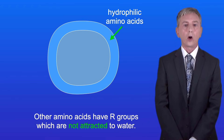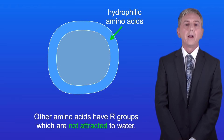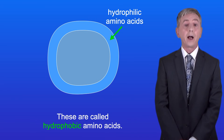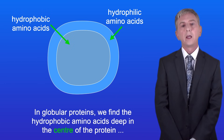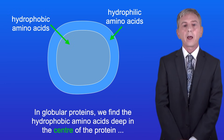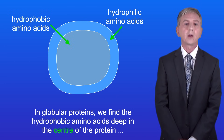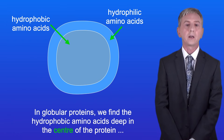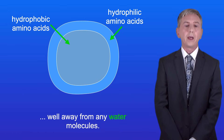Other amino acids have R groups which are not attracted to water, and these are called hydrophobic amino acids. In globular proteins we find the hydrophobic amino acids deep in the center of the protein, well away from any water molecules.